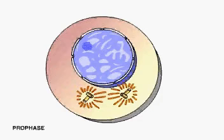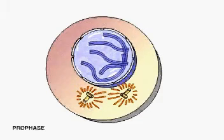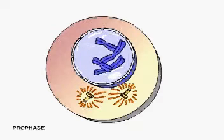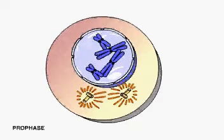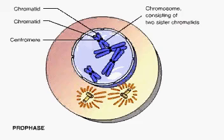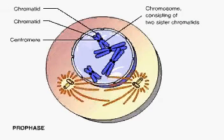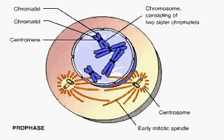During prophase, the nucleoli disappear and chromatin fibers coil up to become discrete chromosomes. Each chromosome consists of two identical sister chromatids joined at the centromere. Microtubules grow out from the centrosomes, initiating formation of the mitotic spindle.